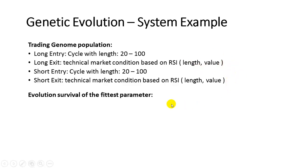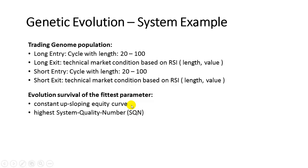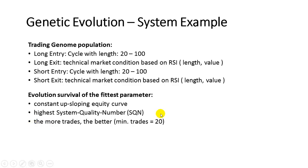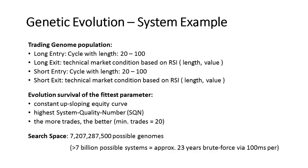Our evolution rule set for survival of the fittest is as follows: we want a constant upsloping equity curve, we favor the highest System Quality Number (SQN), and the more trades the better. We require a minimum of 20 trades — everything below 20 will not be counted.